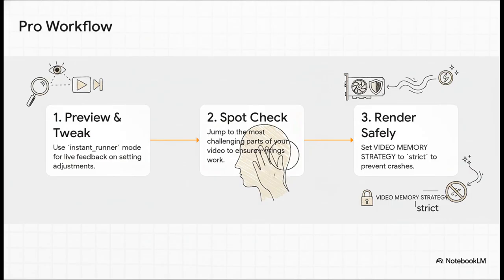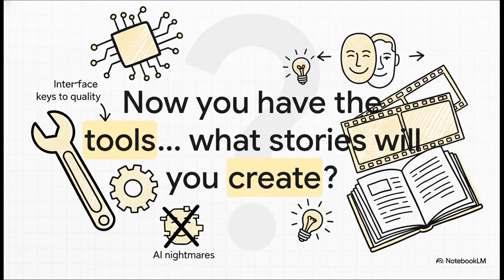So there you have it. We've decoded the entire interface, unlocked the two biggest keys to quality, and solved the most common AI nightmares. You now have the knowledge to go from those glitchy, weird swaps to truly photorealistic results. The only question left is: with these tools at your command, what stories are you going to create?